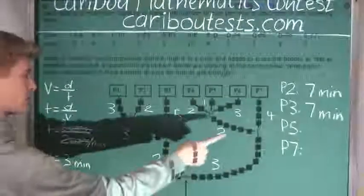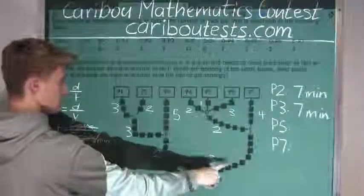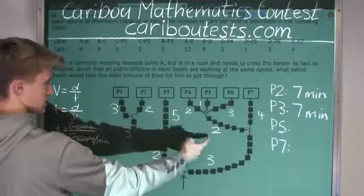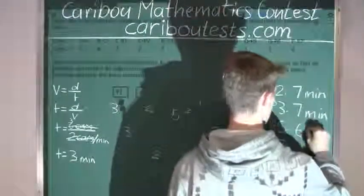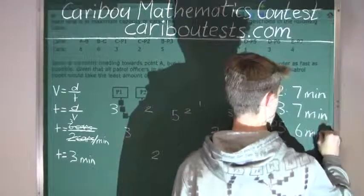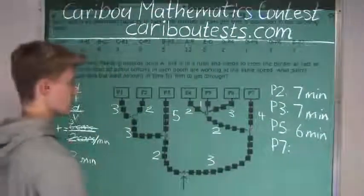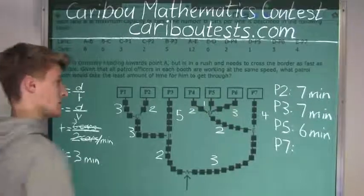And finally, P5, it takes three plus two plus one is, three plus two is five plus one is six minutes. And finally, P7 is three plus four is seven minutes.